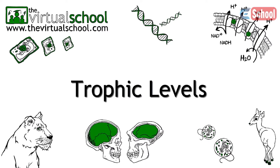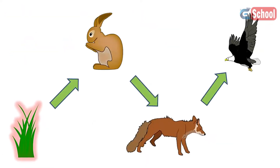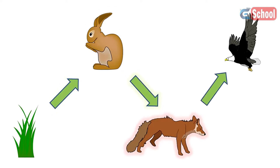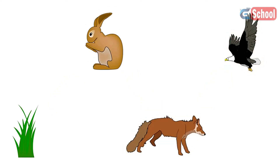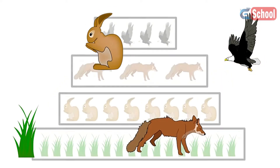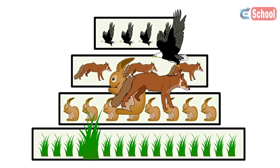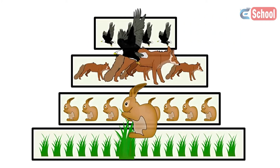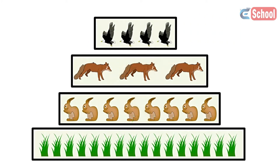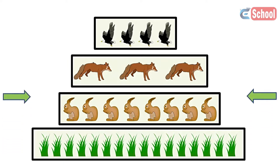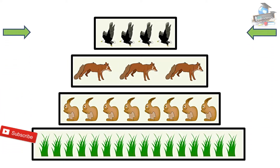A trophic level is a step in a food chain of an ecosystem. The organisms in a food chain are classified into their trophic level depending on their feeding behaviour. The number of steps an organism is from the start of the food chain is a measure of its trophic level.